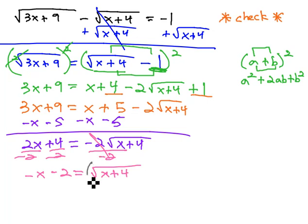And now, we can finally get rid of that last square root by squaring both sides of the equation. Squaring is the opposite of square root, leaving just x plus 4 on the right side.